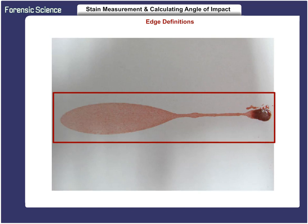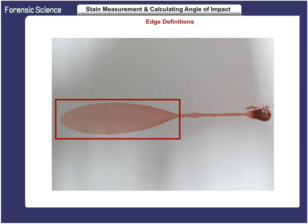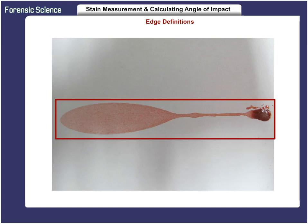Under ideal circumstances of velocity, impact angle, and target surface, a drop of blood on impact would create a stain that was a perfectly uniform oval shape. Ideal circumstances rarely, if ever, exist, particularly in actual casework. The distortion created in response to the landscape of the target surface will prevent the stain from being a perfect oval.